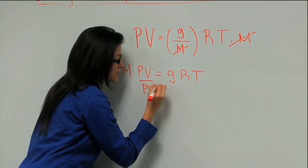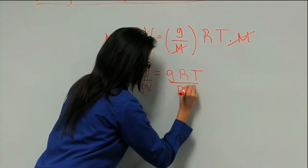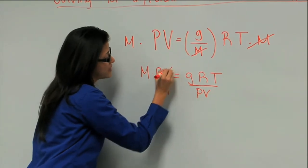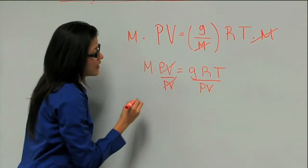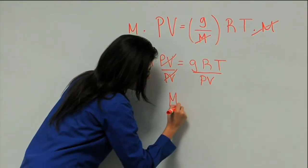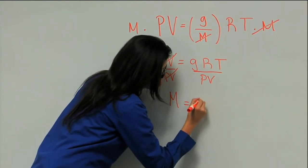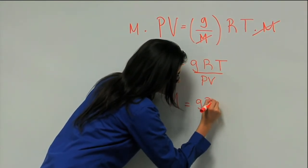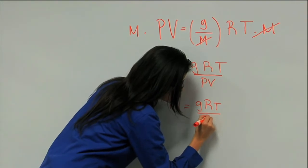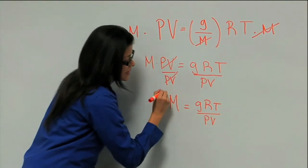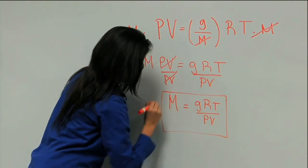Again, on both sides. So we cancel PV on this side, and now we have that M equals G times R times T over PV. And this is the final answer.